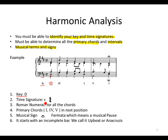The time signature is indicated by a C, which stands for common time — always four-four time. Roman numerals are also used for all the chords: Roman numeral one, four, and five. The primary chords — one, four, five — are all in root position.